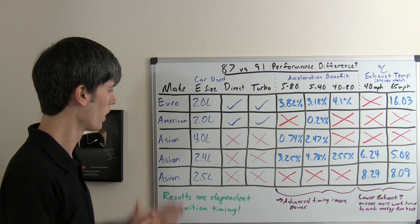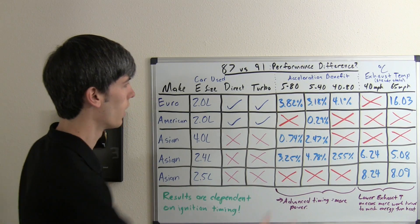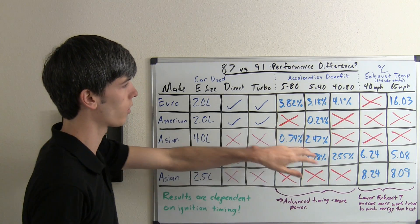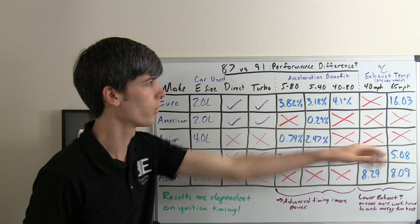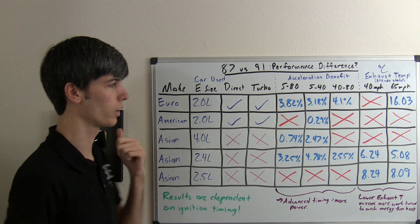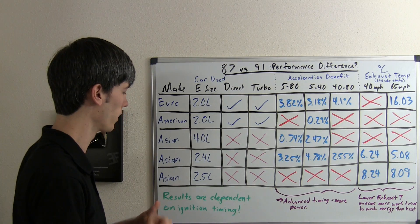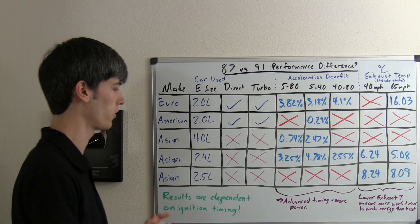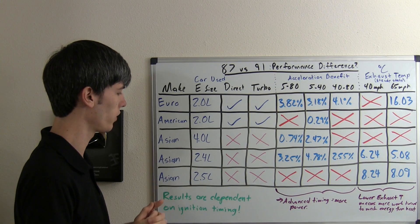As far as these three different Asian vehicles, one of them saw acceleration benefit on the lower end at lower speeds but nothing as far as efficiency. One of them saw not only performance gains but efficiency gains, and the final one saw simply efficiency gains, so it did make sense for all these vehicles.